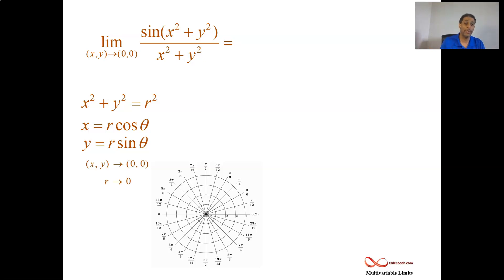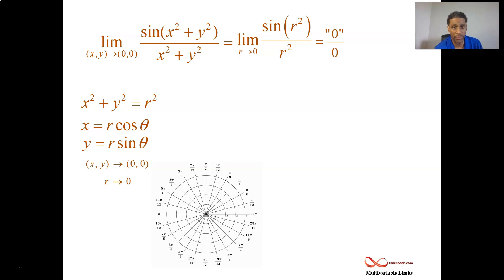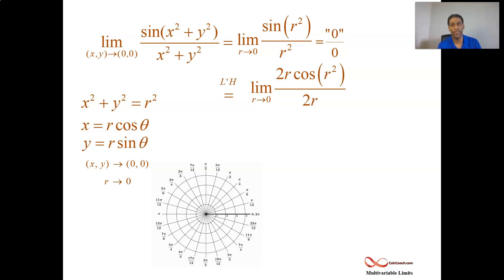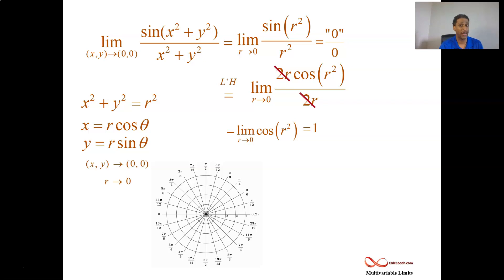So we replace x squared plus y squared with r squared, and now we have a single variable limit — this is a limit from Calc 1. You can apply L'Hôpital's rule since it's a single variable; there's no multivariable L'Hôpital's rule. You have a zero over zero form, so take the derivative of the numerator divided by the derivative of the denominator. The numerator derivative gives cosine of r squared with a chain rule of 2r, and the denominator has 2r. Those cancel, and plugging in zero gives 1. That's the proof for why the f function went to 1.